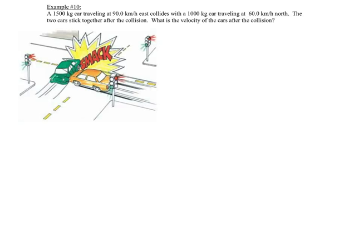Okay, example 10. We have a car-car collision. We have a car going 90 km an hour, that is 1,500 kg, and another car, a smaller car, 1,000 kg, going at 60 km an hour. One's going east and one's going north, and the cars stick together after the collision. We're asking for the velocity of the cars after the collision.